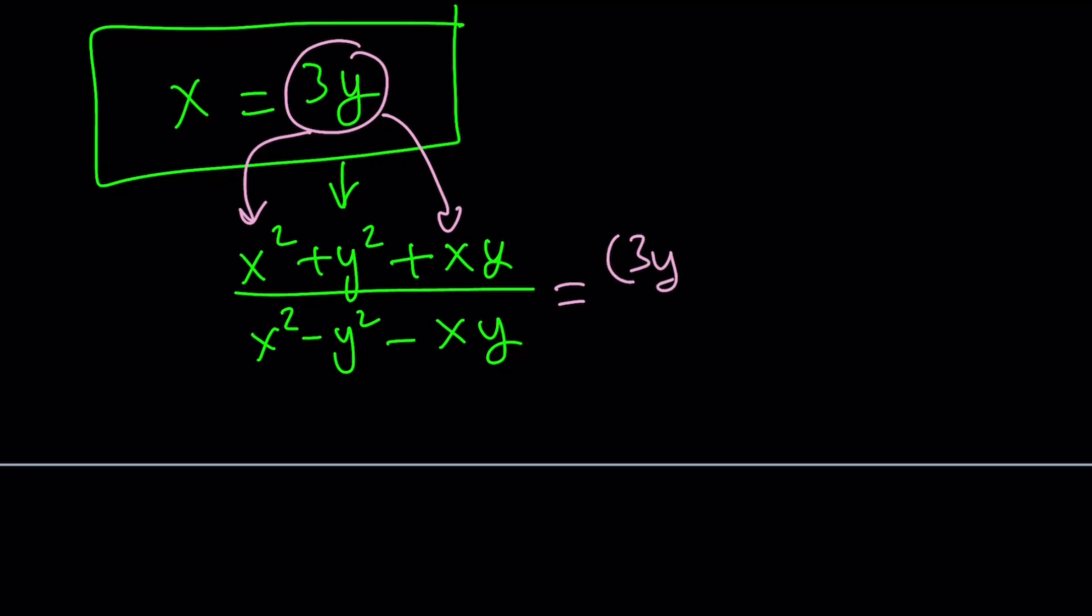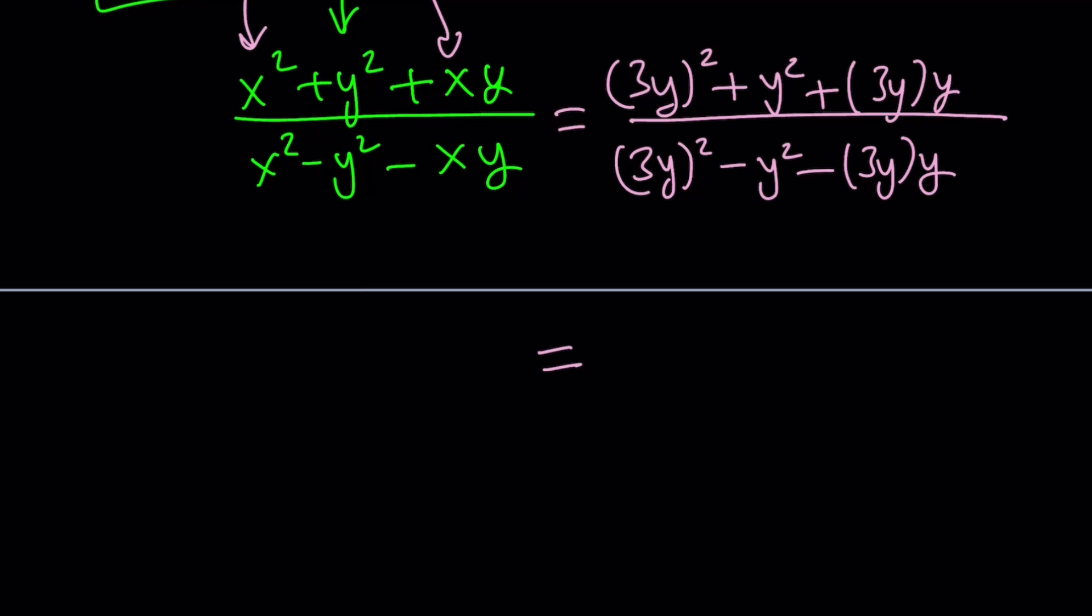So this is going to be 3y squared plus y squared plus 3y times y divided by 3y squared minus y squared minus 3y times y. And let's see what this becomes. This is 9y squared plus y squared plus 3y squared divided by 9y squared minus y squared minus 3y squared.